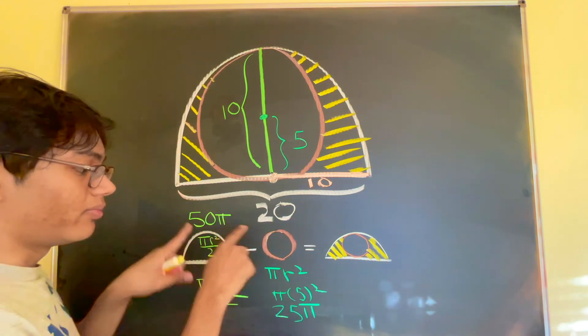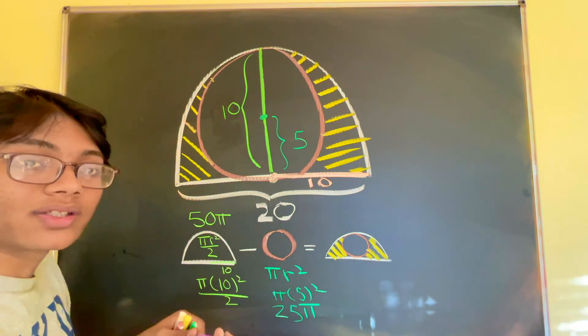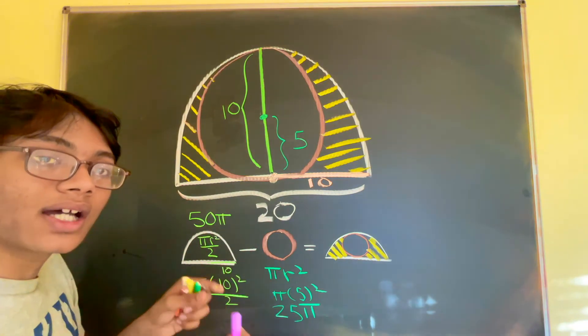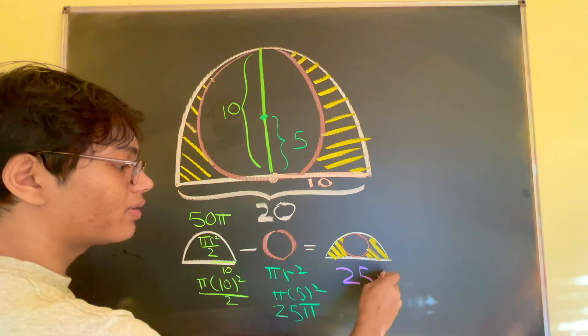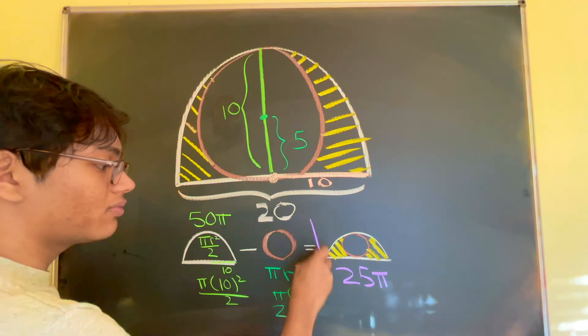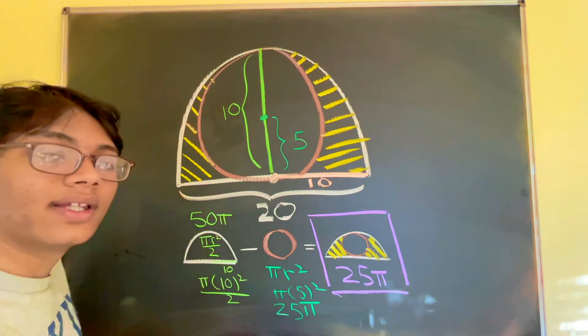So this is 50 pi. This is 25 pi. If we subtract them, 50 pi minus 25 pi is going to give us the contribution from the yellow region which will be 25 pi. And that, ladies and gentlemen, is the answer to our question. 25 pi. Thanks for watching.